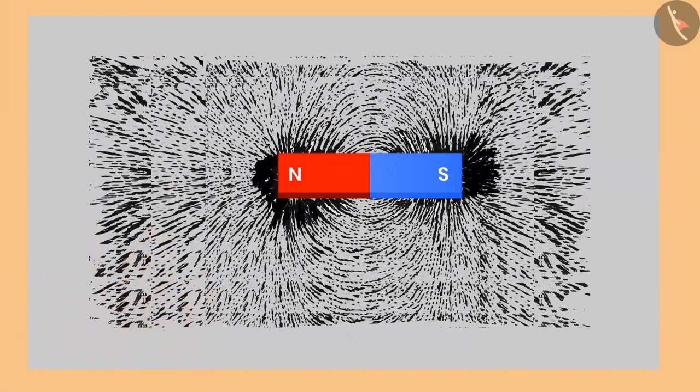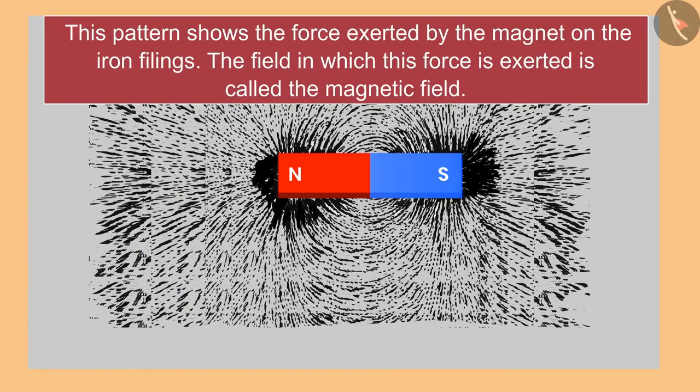If we look at the fillings closely, a formed pattern can be seen. This pattern shows the force exerted by the magnet on the iron filings. The field in which the force is exerted is called the magnetic field. The lines on which the fillings can be seen are known as magnetic field lines.